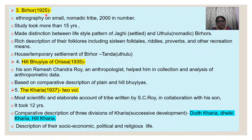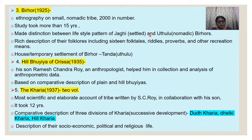The third monograph was written on the Birhor tribe. This is a very small and nomadic tribe, numbering only around 2000 at the time S.C. Roy wrote the monograph. This study took more than 15 years, and in this monograph he distinguished between two types of Birhors — two divisions: Jagi and Uthulu Birhors. Jagi Birhors were the settled Birhors, and Uthulu Birhors were the nomadic Birhors.